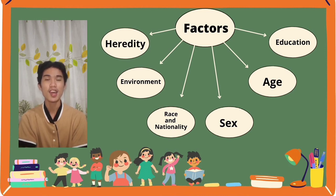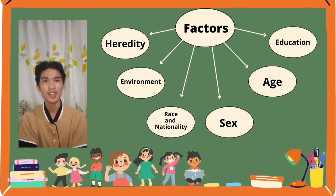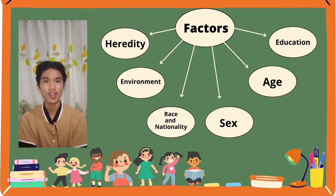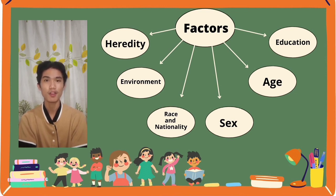The six factors are: nature, heredity, environment, race and nationality, sex, age, and education. These factors will be discussed by each member of the group based on their assigned topics.